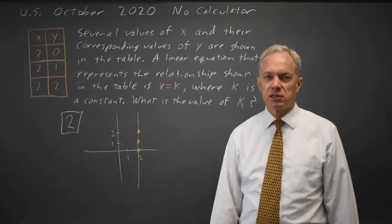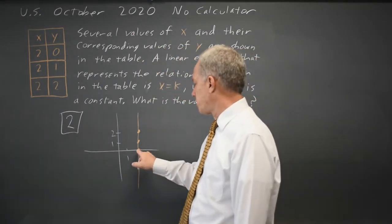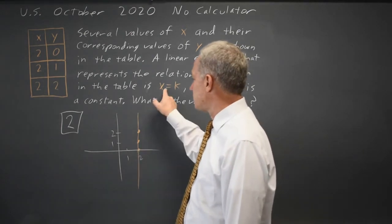it's the vertical line with an x-intercept of 2, and that is x equals 2.